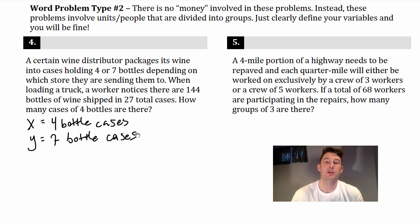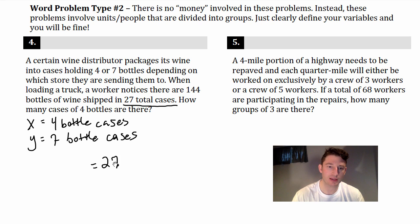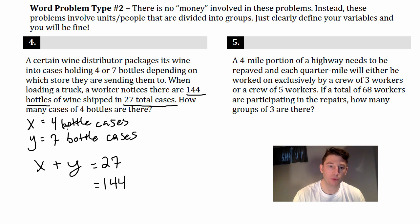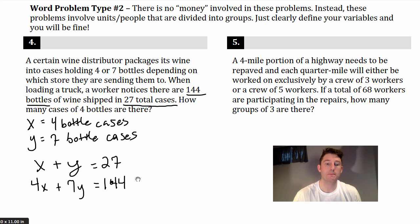Now figure out your two equations. Something equals 27 cases — that's the four-bottle cases plus the seven-bottle cases, so X plus Y equals 27. For the second equation, something equals 144 total bottles. We have the number of four-bottle cases, so that's 4X, plus seven times the number of seven-bottle cases, so 7Y. That gives us 4X plus 7Y equals 144.